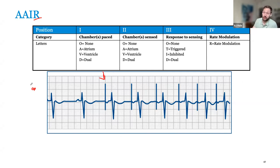These rate responsive sensors can be tricked — the casino ball type, for example: on a roller coaster, your heart rate can increase because the device is sensing movement. The sensor detects the change or possible need for a rate increase and increases the rate accordingly.